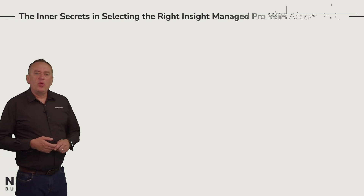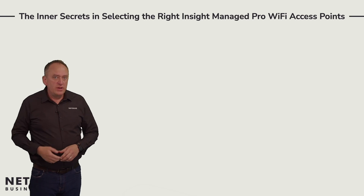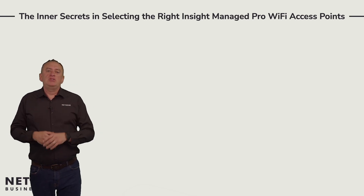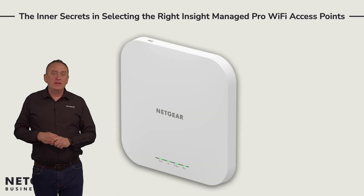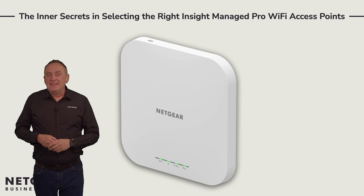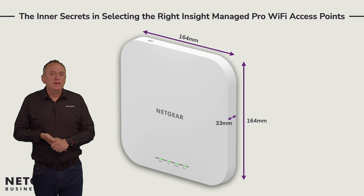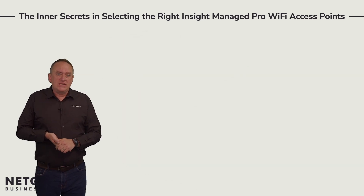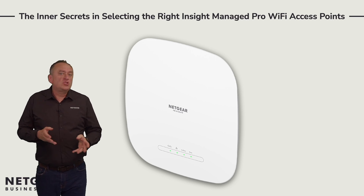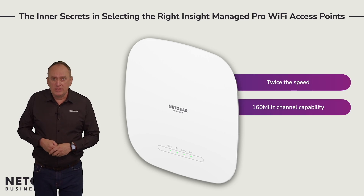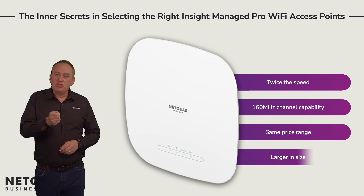Finally, beyond what those tools tell you, there is of course the human intelligence input needed to refine your selection. If physical dimension is your most critical requirement, the WAX 610 is unquestionably your winner — it's in a 164mm by 164mm by 33mm enclosure, so you can fit it anywhere. The WAX 615 is the faster version of the WAX 610, with almost twice the speed because of its 160 MHz channel capability on the 5 GHz band. It's in the same price range, however it is larger in size.